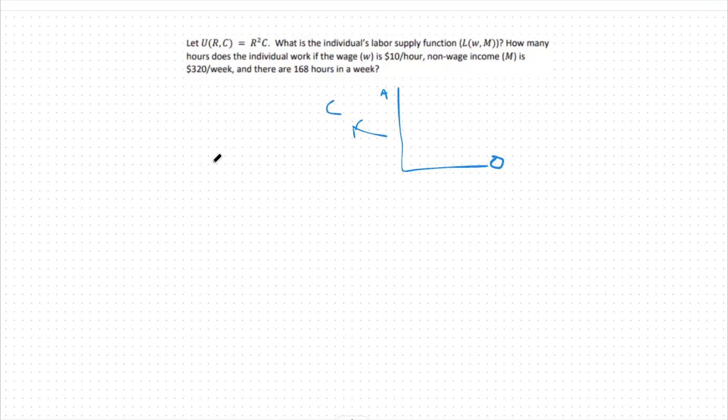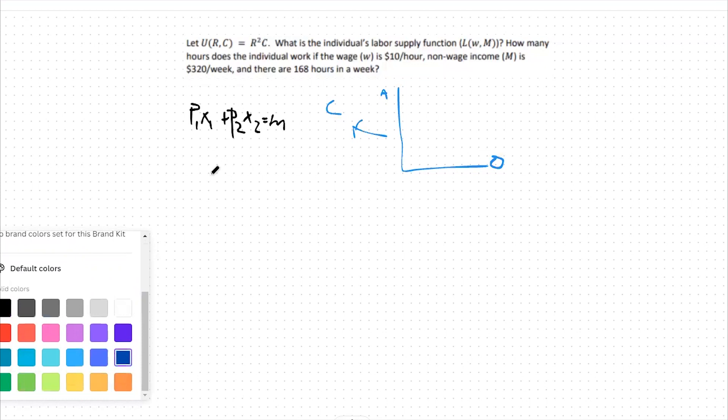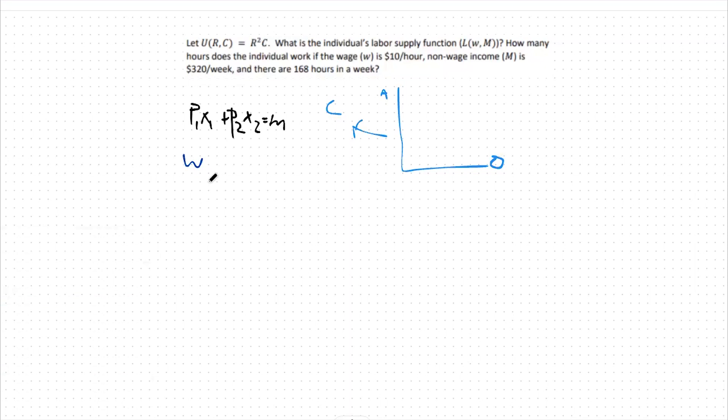For our budget constraint it's going to look a little different than before. Our typical framework for a budget constraint is p1x1 plus p2x2 equals m. With labor supply we're looking at the same thing but a little bit different in terms of the variables. So we're going to say wR plus C equals m plus wL bar.